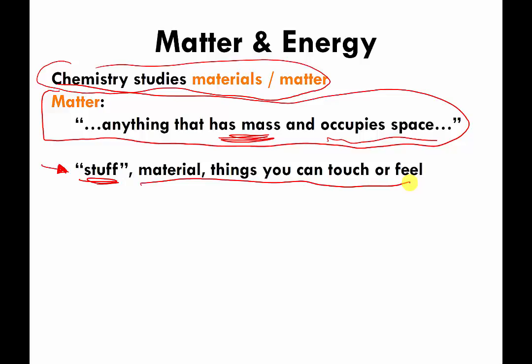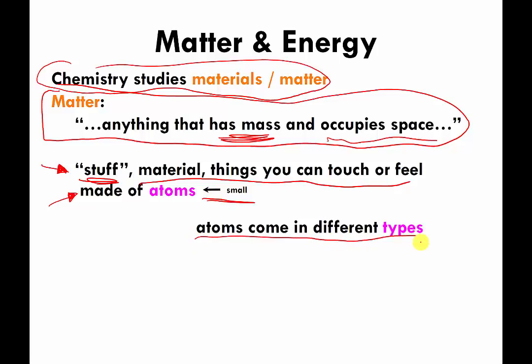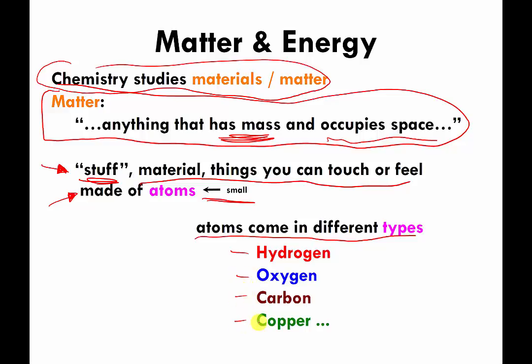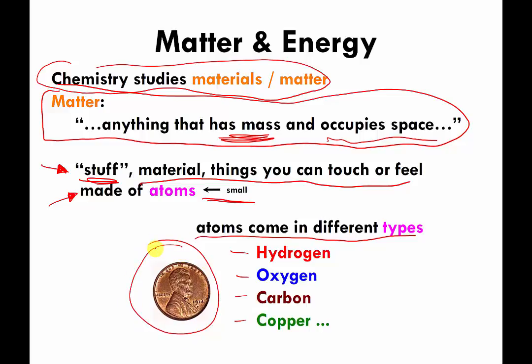Chemistry is interested in learning as much as it can about things in the physical world — things you can touch and feel. This is probably not news to anybody, but all material objects are made of atoms. Atoms are small. There are many different types of atoms: hydrogen atoms, oxygen atoms, carbon atoms, copper atoms. For example, this penny is made almost exclusively of copper atoms.